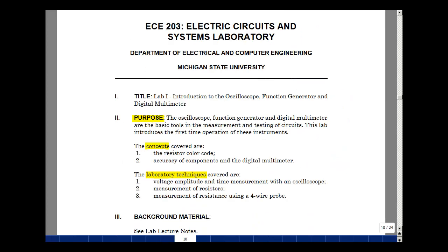Now every lab has a purpose, and the purpose of this lab is to introduce the oscilloscope, function generator, and digital multimeter as our basic measurement and testing tools. This will be our first time use of this equipment. Now each lab has concepts and techniques. The concepts that we covered are the resistor color code and the accuracy of the components in the digital multimeter.